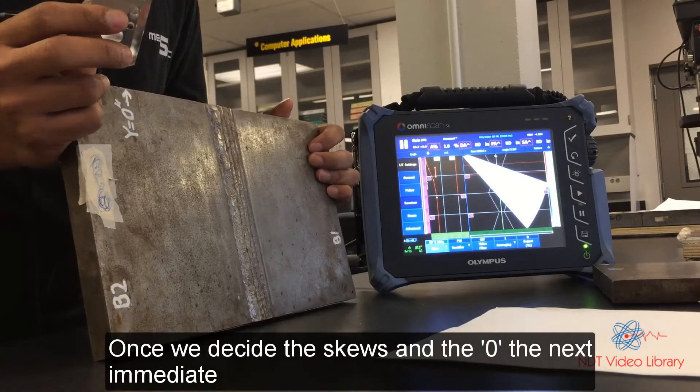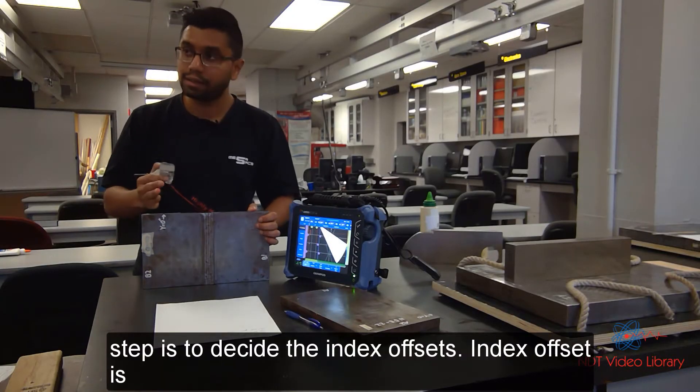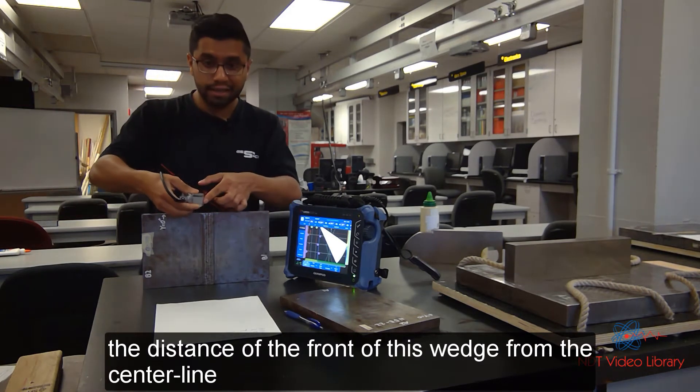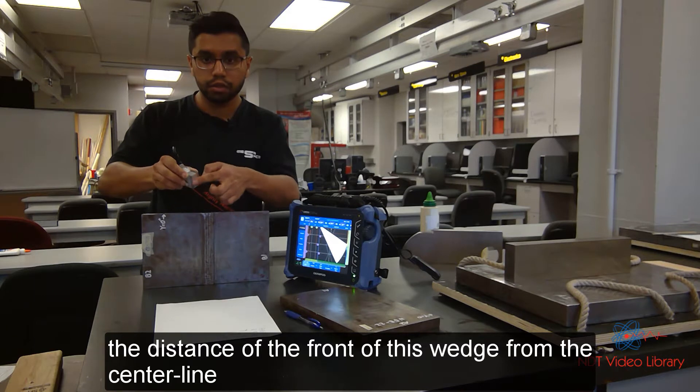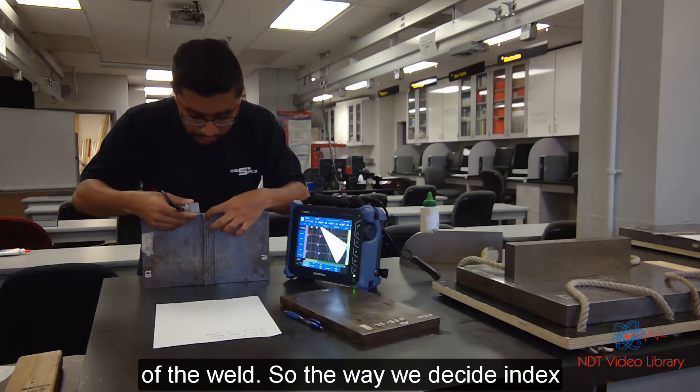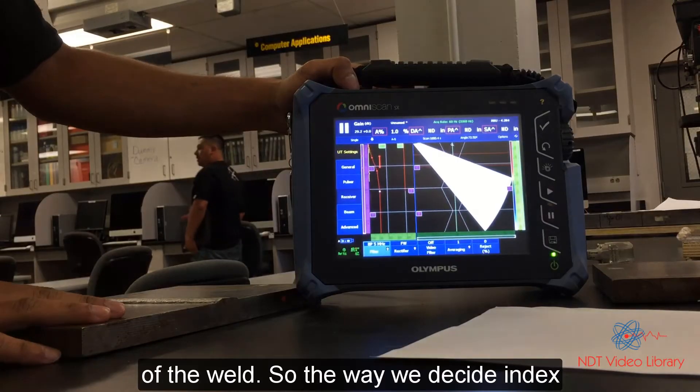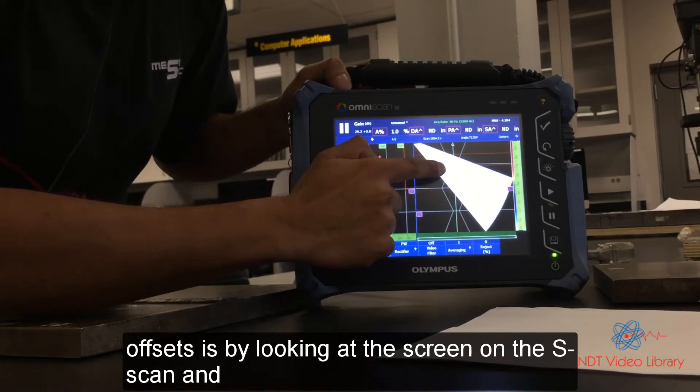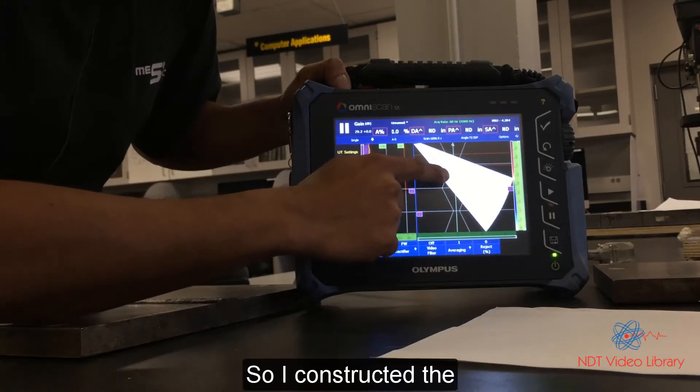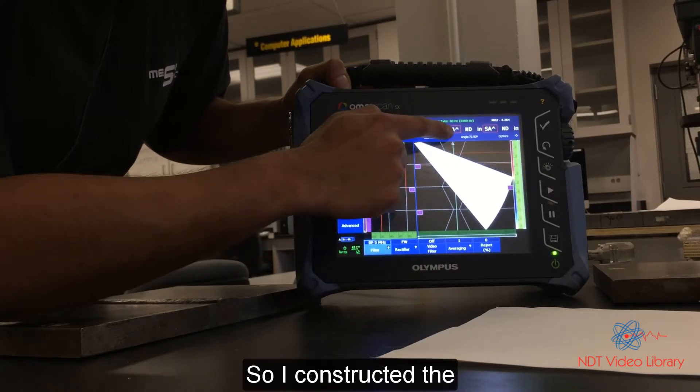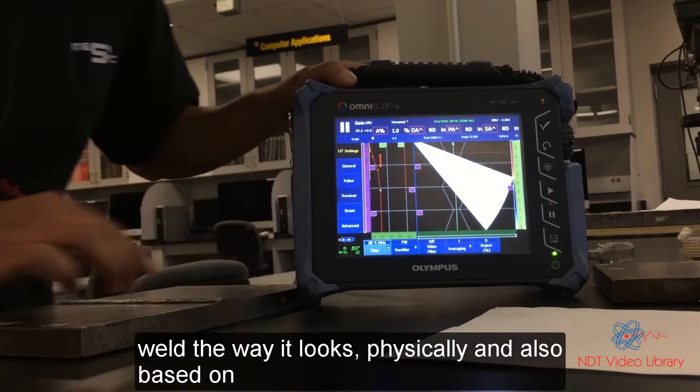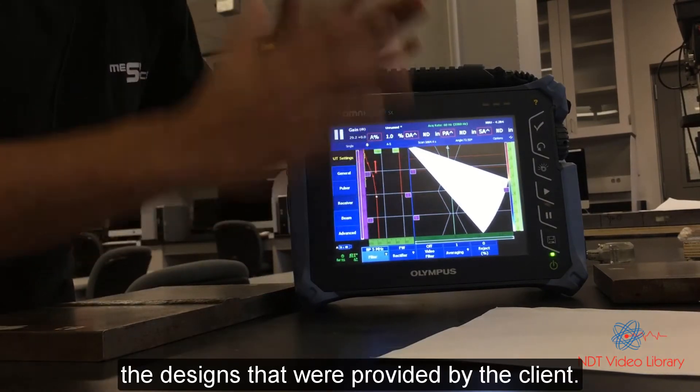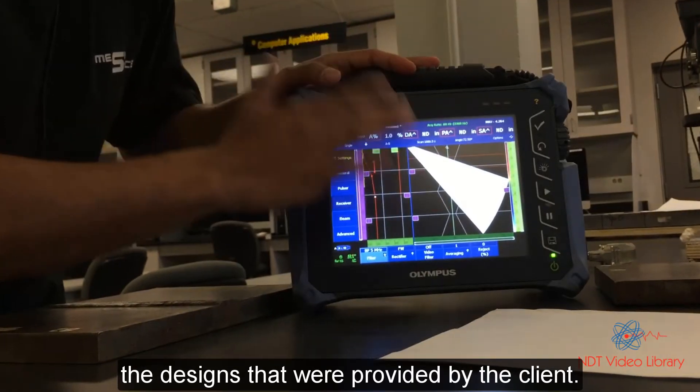Once we decide the skews and the zero, the next immediate step is to decide the index offsets. Index offset is the distance of the front of this wedge from the center line of the weld. So the way we decide index offsets is by looking at the screen on the S scan. I'm constructing the weld the way it looks physically and also based on the designs that were provided by the client.